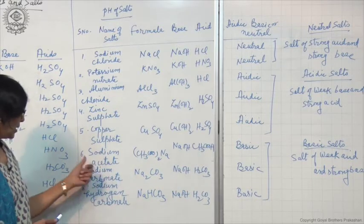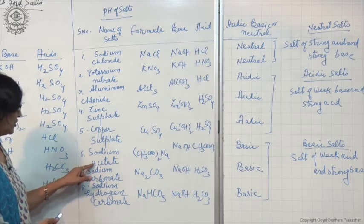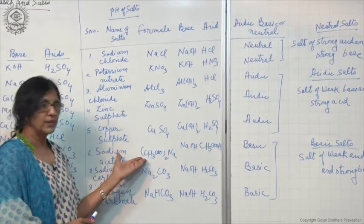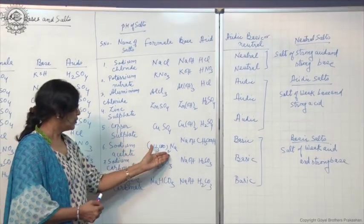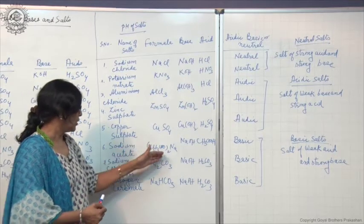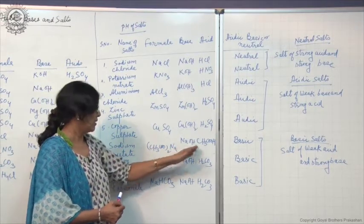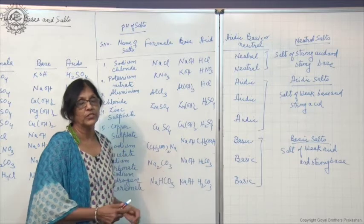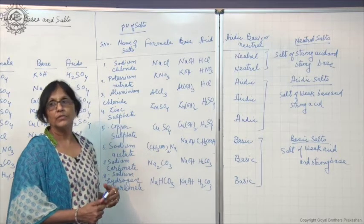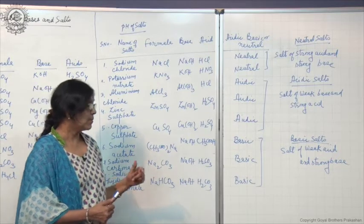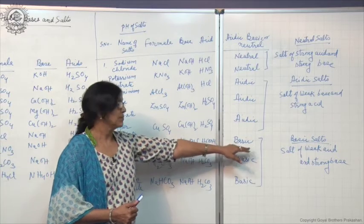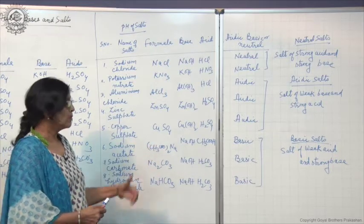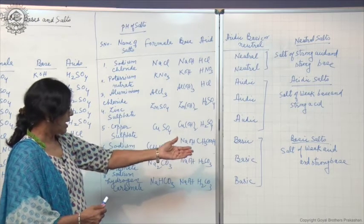The third type of salt is sodium acetate. Its formula is CH₃COONa. It is formed by the combination of a strong base NaOH and a weak acid, acetic acid CH₃COOH. When its salt solution is tested with red litmus paper, the colour of the red litmus paper changes to blue, showing that the salt solution is basic in nature. So these are called basic salts.